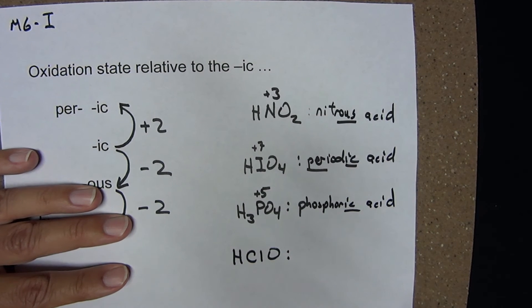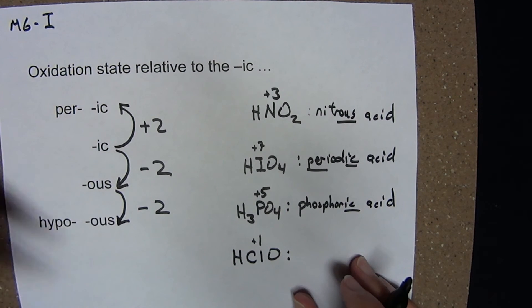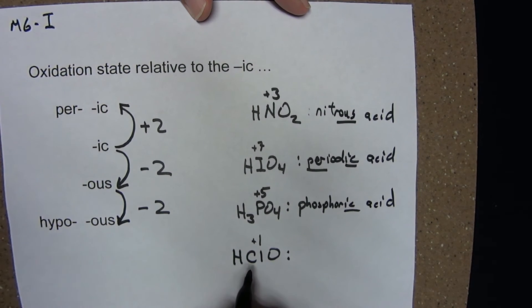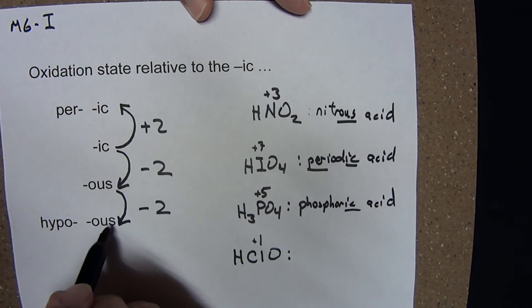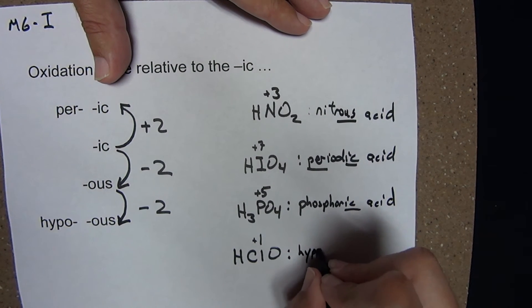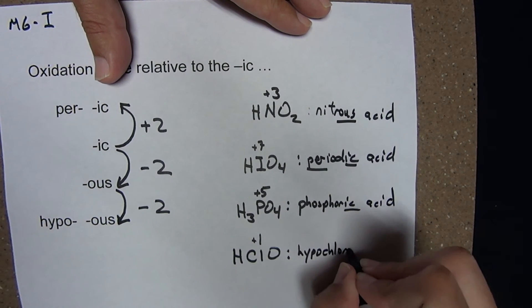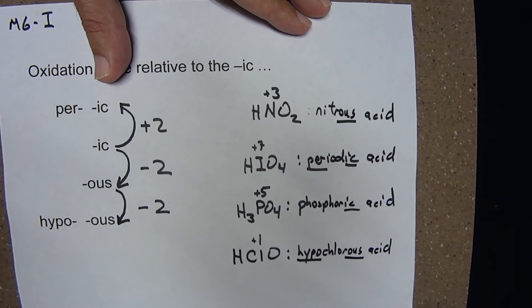HClO: the oxidation state of that chlorine is plus 1. This is a halogen, and for the halogens the ic acid has an oxidation state of plus 5. I'm 4 less than the ic, which makes this the hypo-ous acid. This is hypochlorous acid.